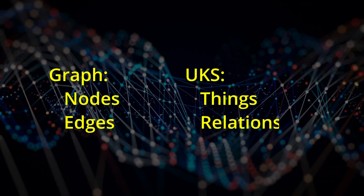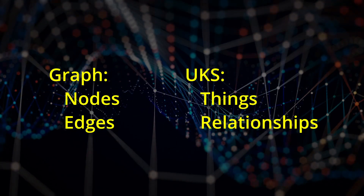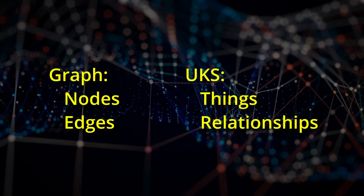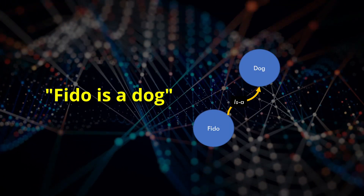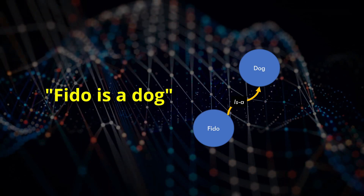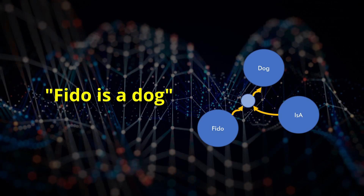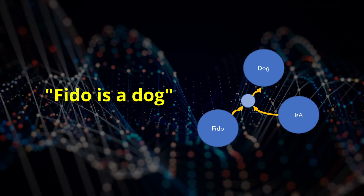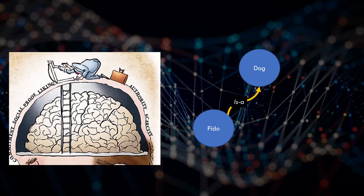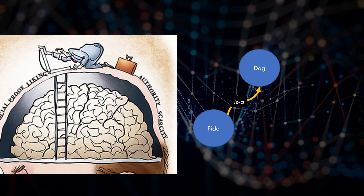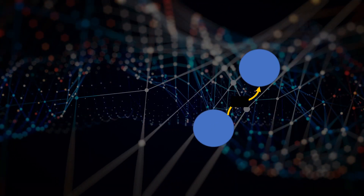Within the UKS, nodes are called things, while edges are called relationships. My go-to first relationship is: FIDO is a dog. You could imagine that it looks like a simple graph, but it's not quite that simple. In the UKS, the relationship type is also a node. If we looked inside your brain, we'd see that neurons don't have convenient labels. If we remove them, how does the graph represent knowledge?